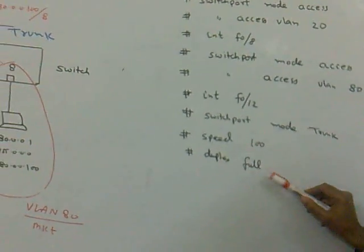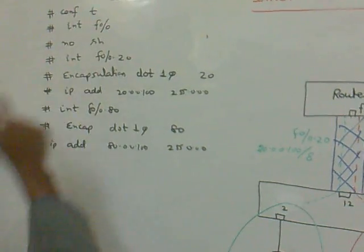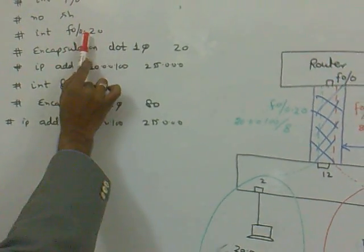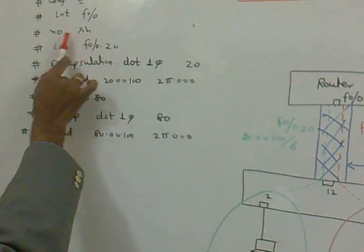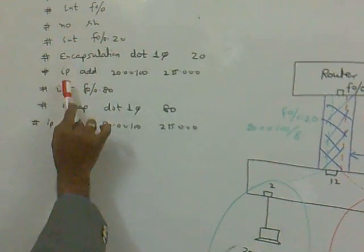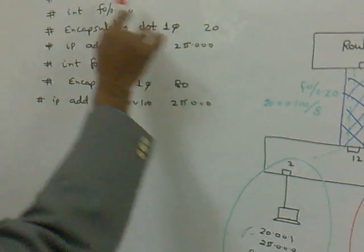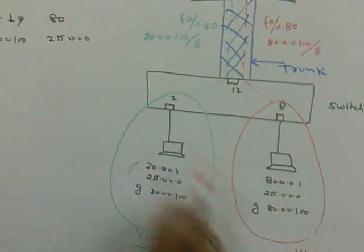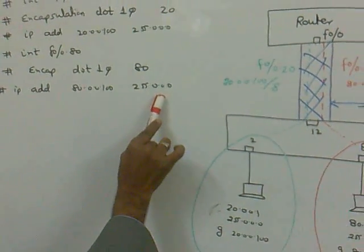Now create the sub-interface for VLAN 20: interface F0/0.20, encapsulation dot1Q 20, then apply the IP address 20.0.0.0 with mask 255.0.0.0, and no shutdown on the sub-interface since we already did no shutdown on the physical interface. For VLAN 80: interface F0/0.80, encapsulation dot1Q 80, IP address 80.0.0.0 with mask 255.0.0.0.